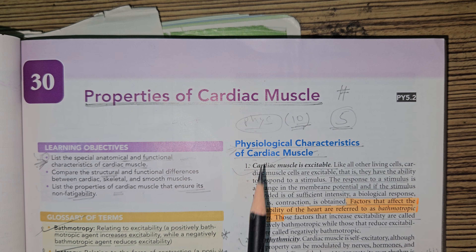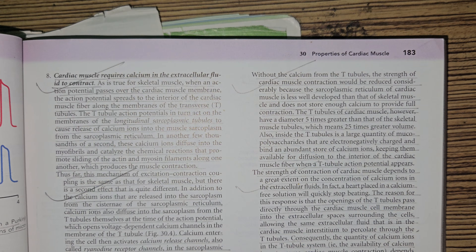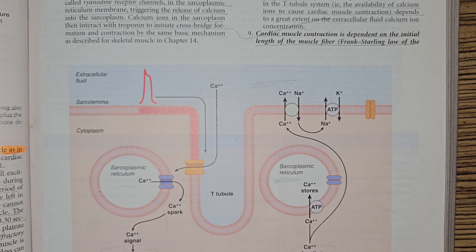We are studying physiological characteristics of cardiac muscle — that is learning objective number one. We studied five physiological characteristics, and now in this video we are going to study physiological characteristics number 6th, 7th, and 8th. In total there are 10 physiological characteristics, and this video is mainly about this diagram.